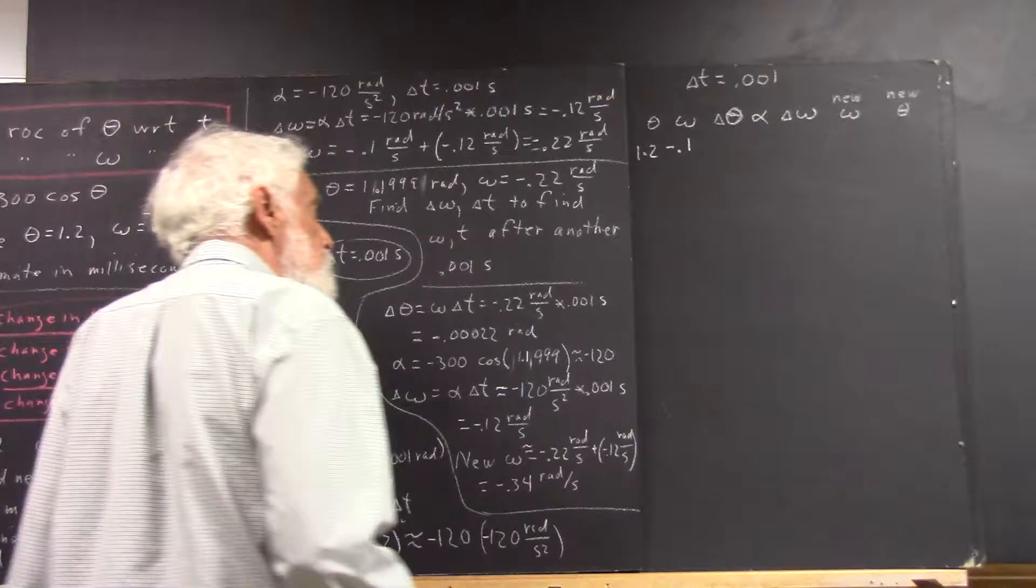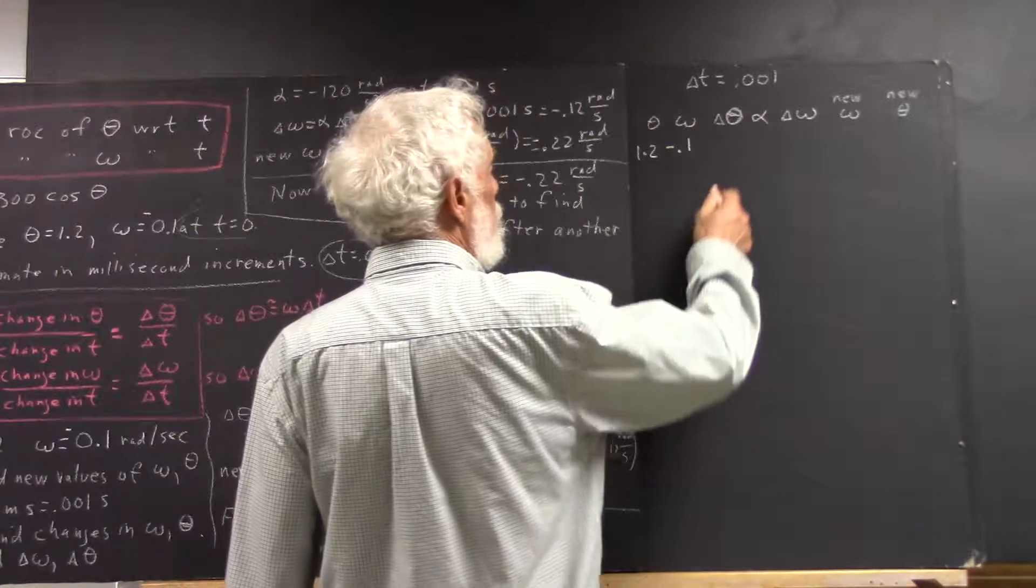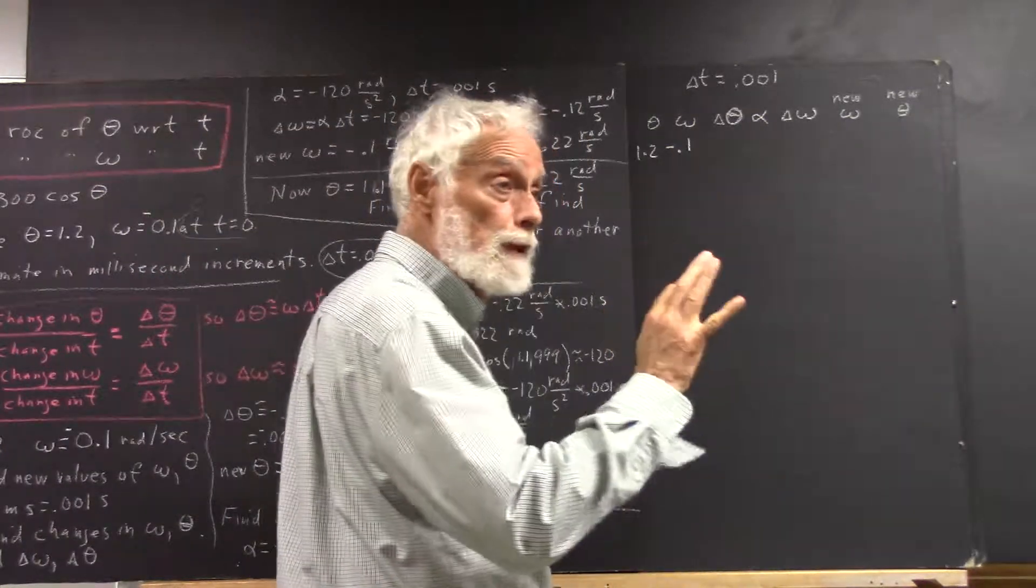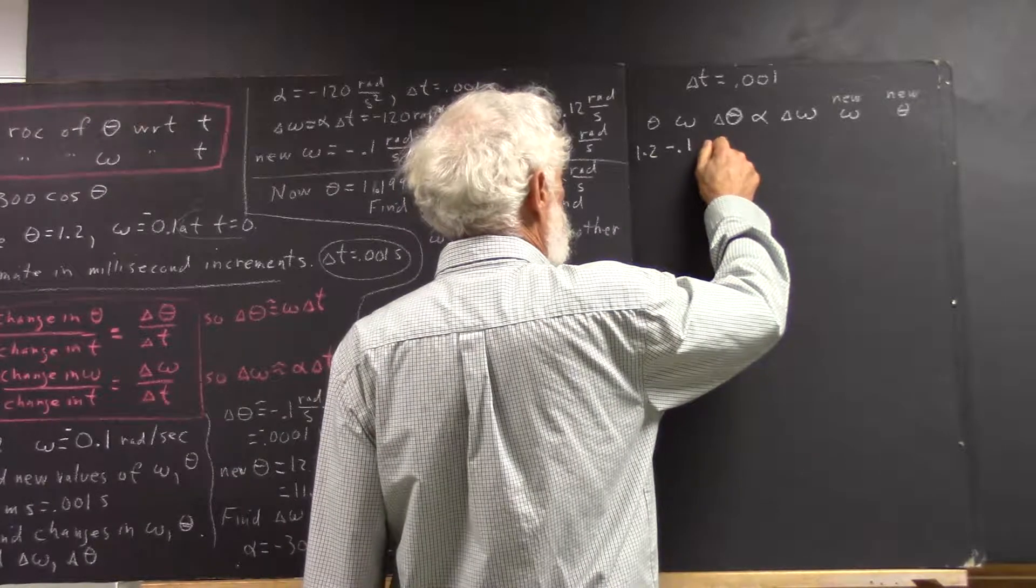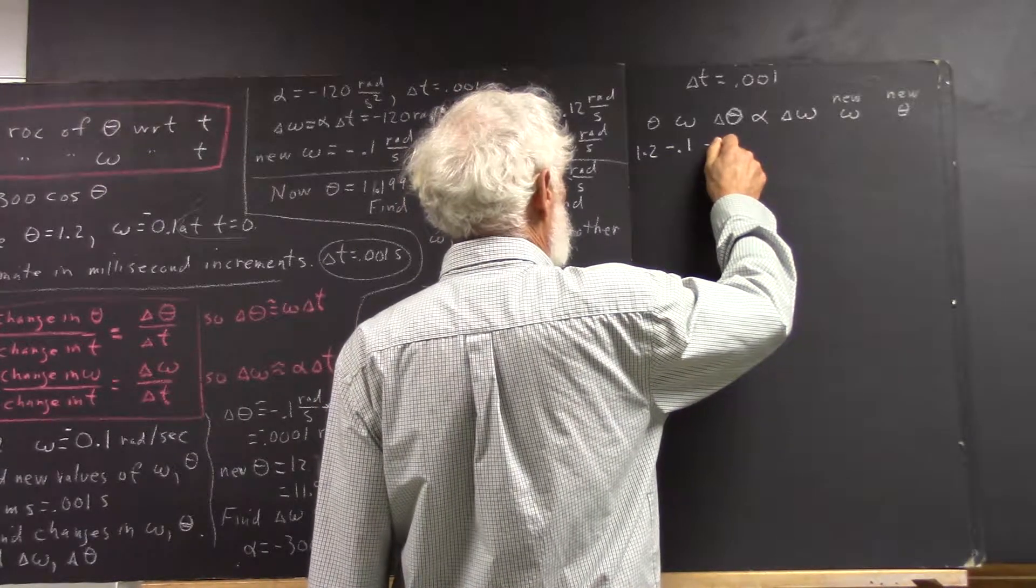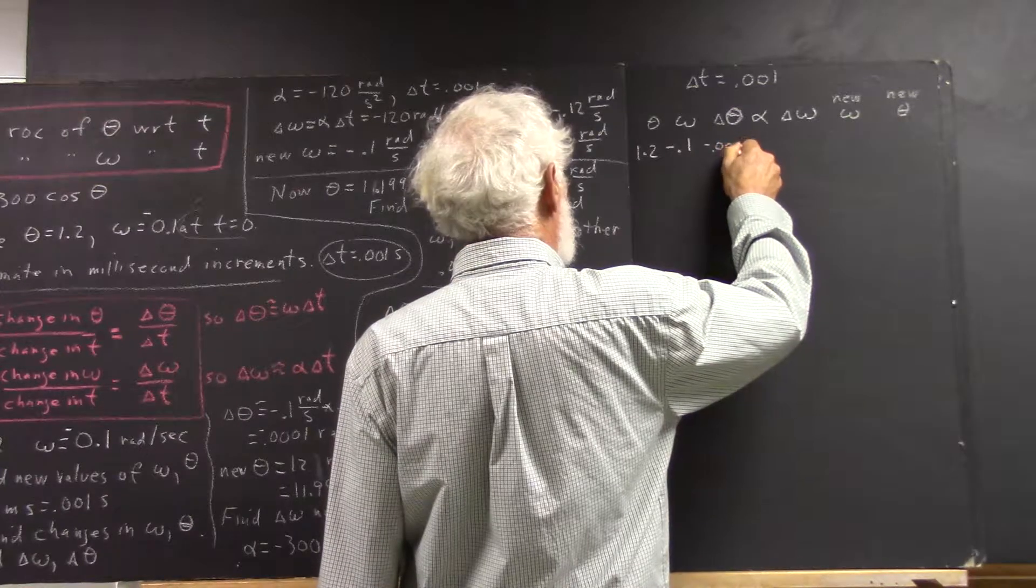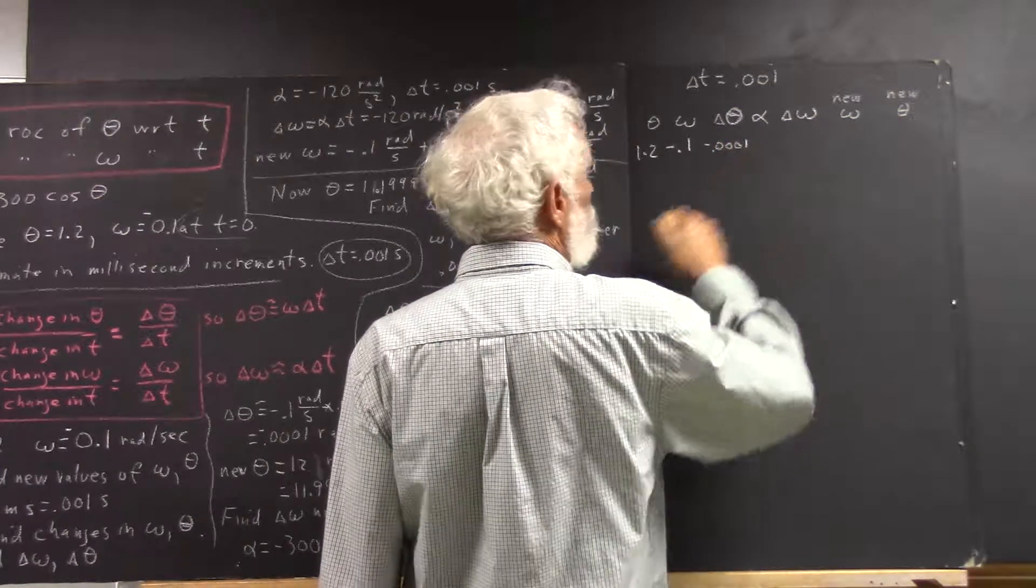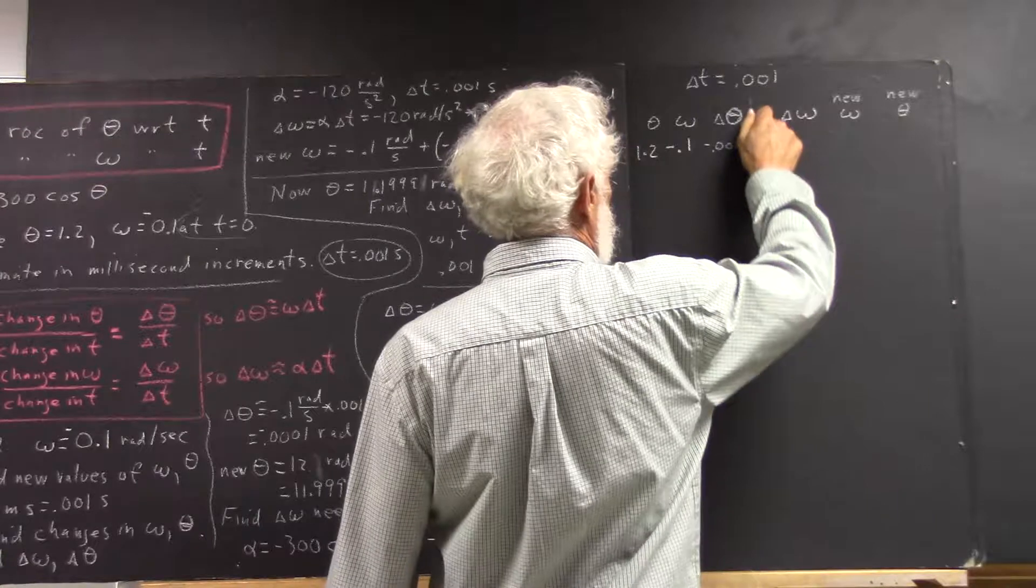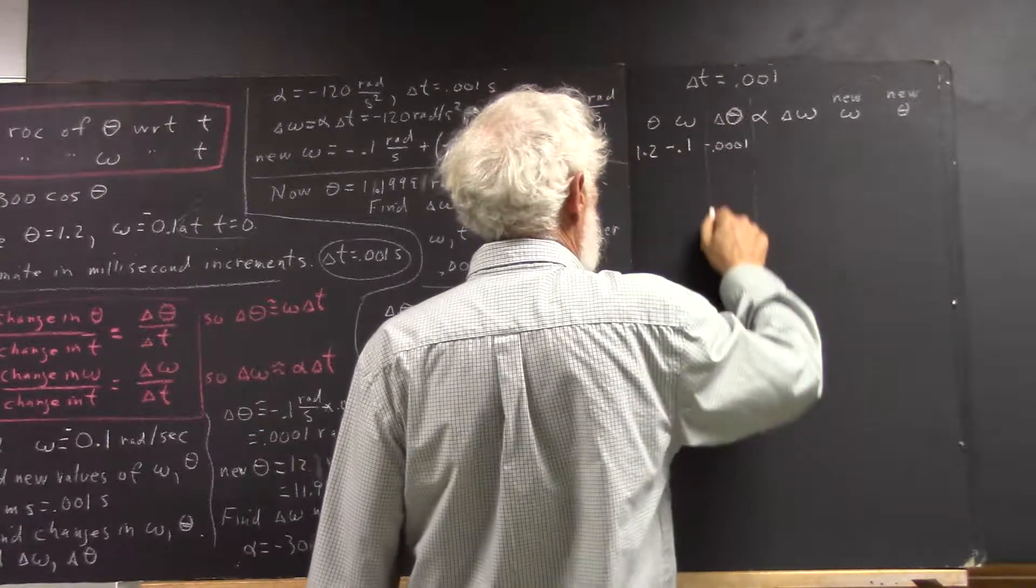Okay, so in our first time interval our delta theta was negative 0.0001. I didn't really leave myself room to write that down, so let's make a column because that's a little bit of a long number.